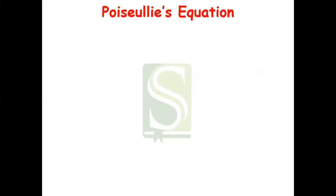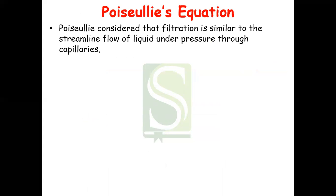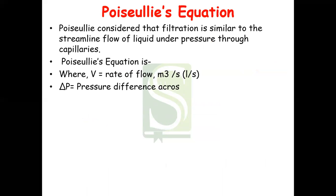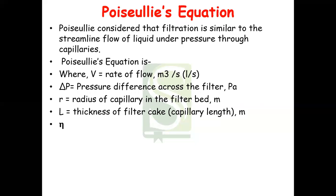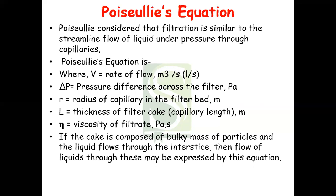The first theory proposed was by Poiseuille, and hence the equation given is called Poiseuille's equation. Poiseuille considered that filtration is similar to the streamlined flow of liquid under pressure through capillaries. Poiseuille gave an equation where V is the rate of flow, delta P is the pressure difference across the filter, R is the radius, L is the thickness, and eta is the viscosity. If the cake is composed of a bulky mass of particles and the liquid flows through the interstices, then flow of liquid through these may be expressed by this equation.